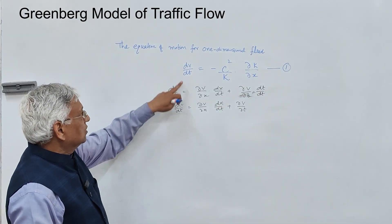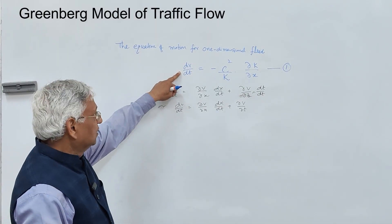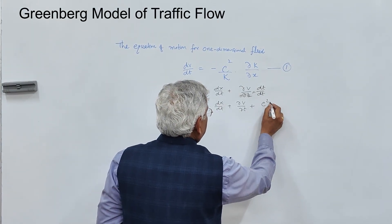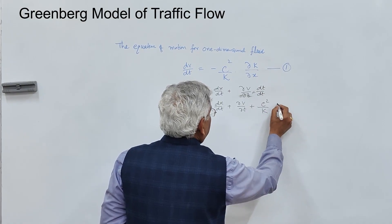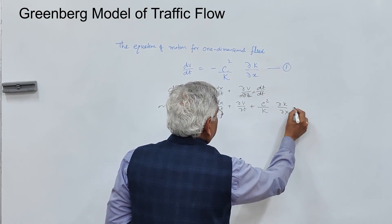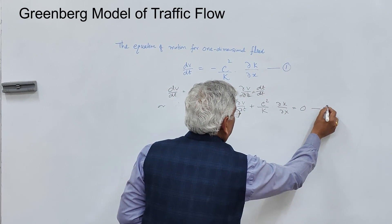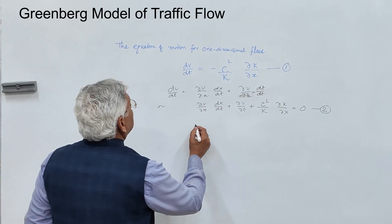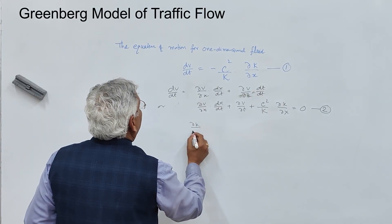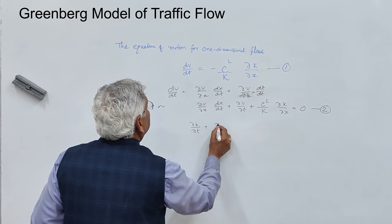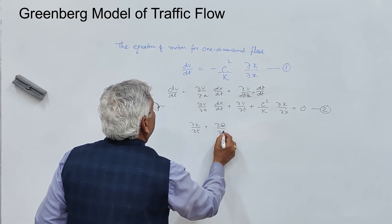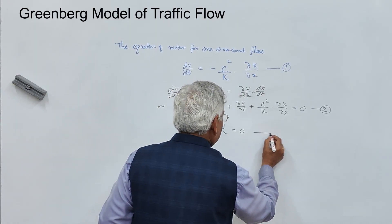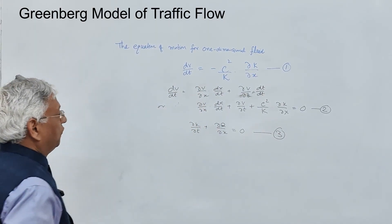If you substitute this into the first equation, then del-v upon del-x into dx/dt plus del-v upon del-t plus c-squared upon k into del-k upon del-x equals zero. The equation of continuity of flow is: del-k upon del-t plus del-q upon del-x equals zero.